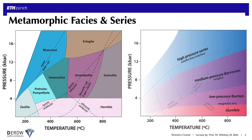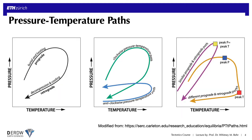Magmatic arcs are typically forming fairly close to the surface, but are of course quite hot, so they typically define the low-pressure but high-temperature Buchan series and contact metamorphism, which is Hornfels. Something used very frequently to reconstruct tectonic histories are pressure-temperature paths that track how the rocks have proceeded through these different metamorphic facies and series — these are often very diagnostic of particular tectonic environments.